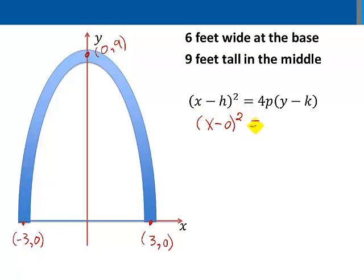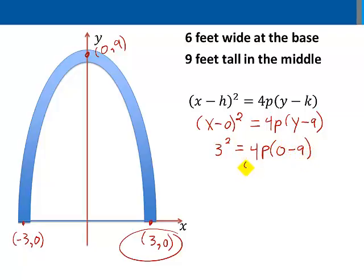So (x - 0)² = 4p(y - 9), and then let's use the point (3,0) that is on our arch to solve for p. 3² = 4p(0 - 9), and solving this equation for p, we'll find that p equals negative one-fourth.